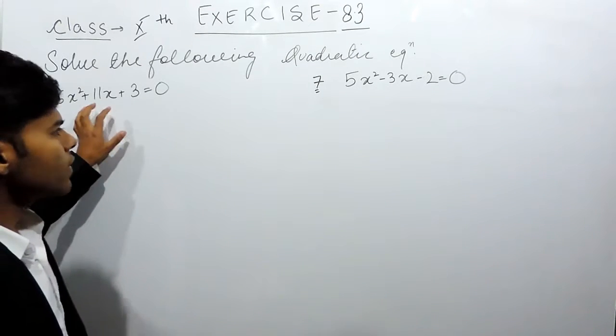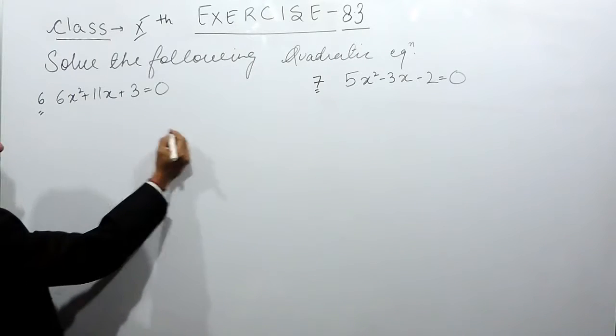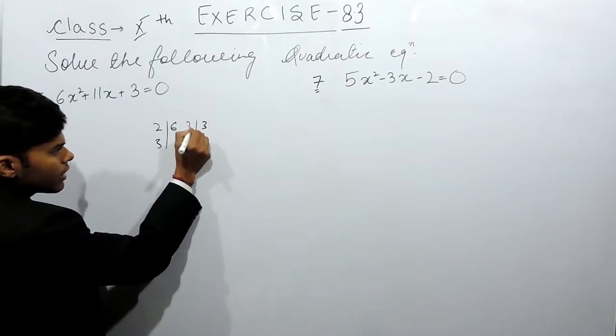So basically we will solve this by factorization method. In the first part, the sixth question, first of all we will do the prime factorization of 6 and 3. So this will be 2 and 3, and this will be 3 and 1.